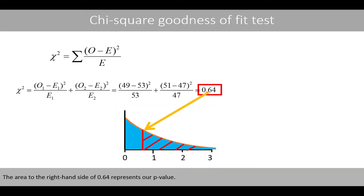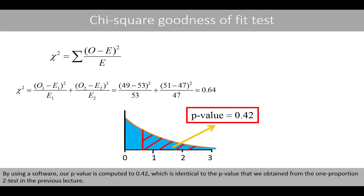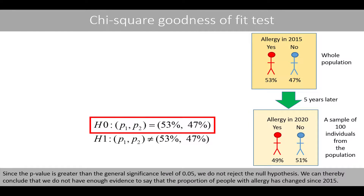The area to the right-hand side of 0.64 represents our p-value. By using software, our p-value is computed to 0.42, which is identical to the p-value that we obtained from the one-proportion z-test in the previous lecture. Since the p-value is greater than a general significance level of 0.05, we do not reject the null hypothesis. We can thereby conclude that we do not have enough evidence to say that the proportion of people with allergy has changed since 2015.